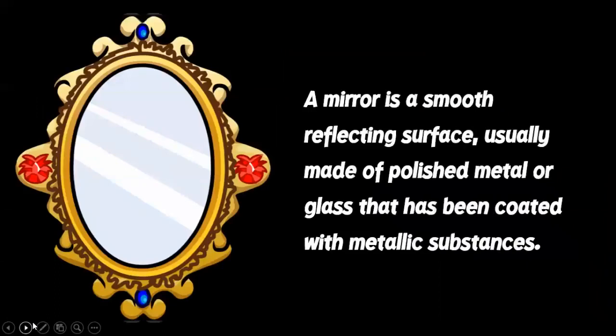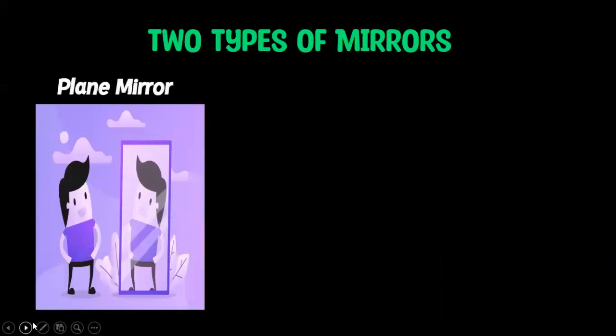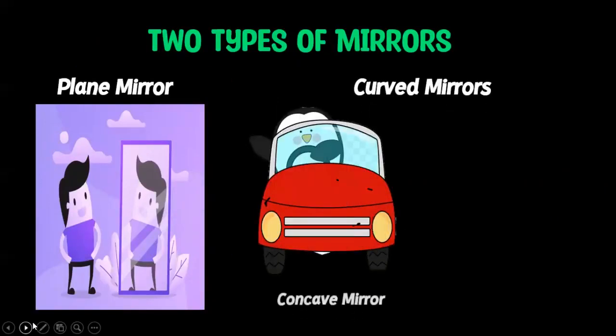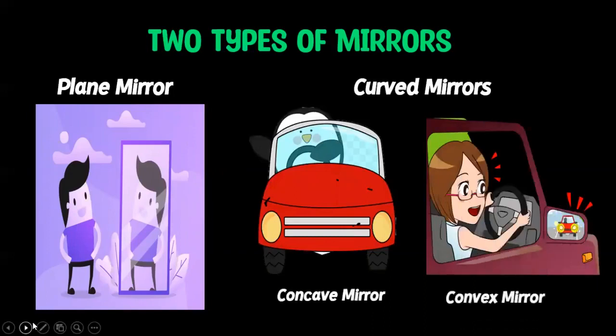A mirror is a smooth reflecting surface, usually made of polished metal or glass that has been coated with metallic substances. We have two types of mirrors: first is the plane mirror, and the second is the curved mirror. Under curved mirrors, we have the concave and the convex mirror.